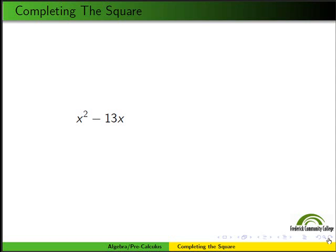Again, by making it a perfect square, we call this process completing the square. So what do I do? I look at the coefficient of x. It's 13. I take half of it, square it, and add it to the end, giving me the perfect square (x - 13/2)².